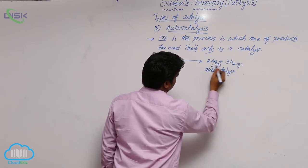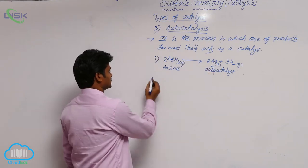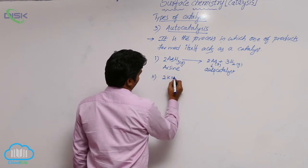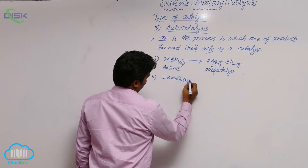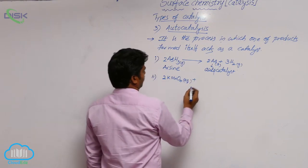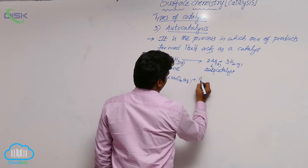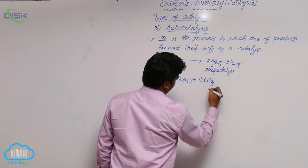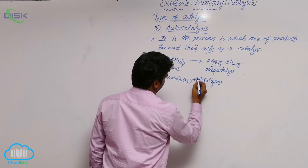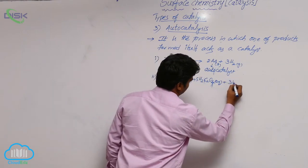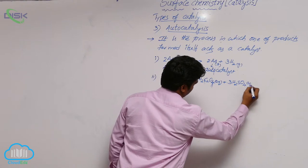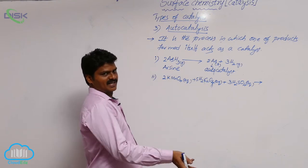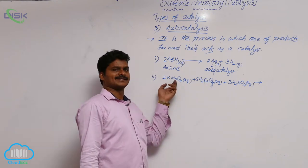So in this reaction, arsenic is the autocatalyst. Now see one more example: the reaction between KMnO₄(aq) plus oxalic acid H₂C₂O₄. In acidic medium — with 3H₂SO₄(aq) — KMnO₄ acts as the oxidizing agent, whereas oxalic acid acts as the reductant.